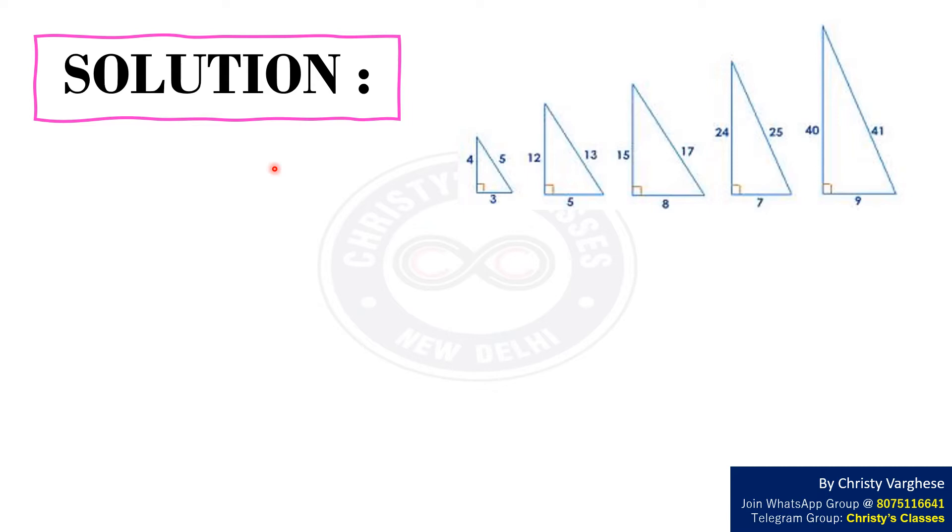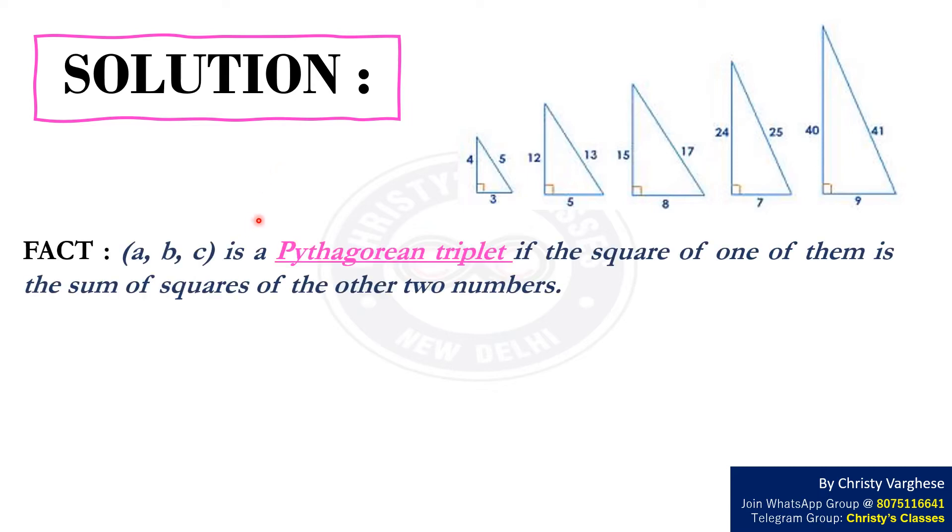Let us recall what a Pythagorean triplet is. ABC is a Pythagorean triplet if the square of one of them is the sum of squares of the other two numbers. For example, let us take 3, 4, 5.